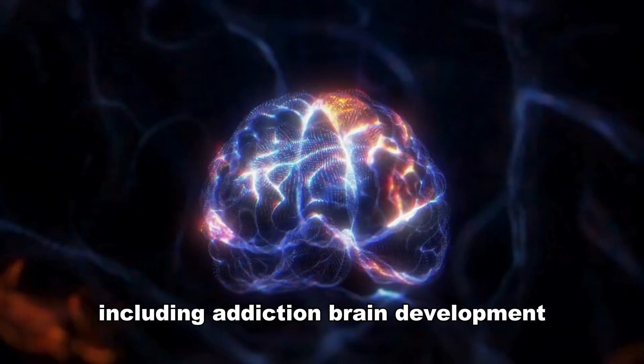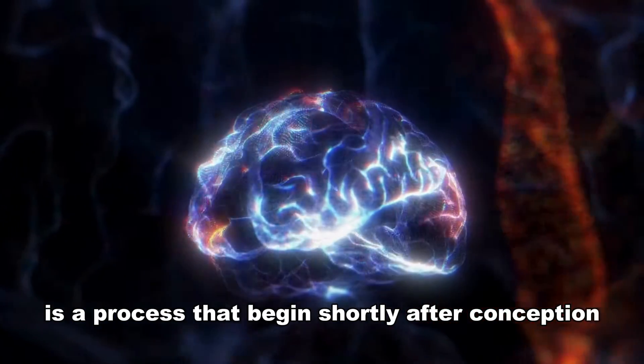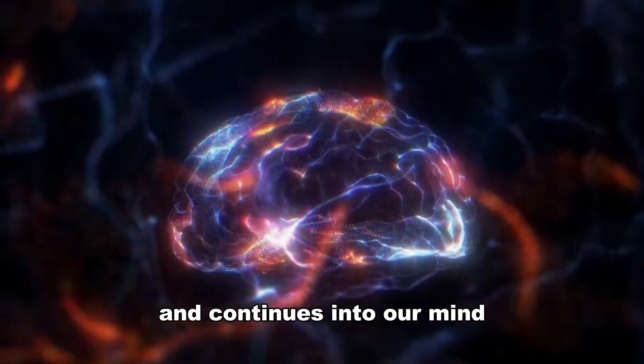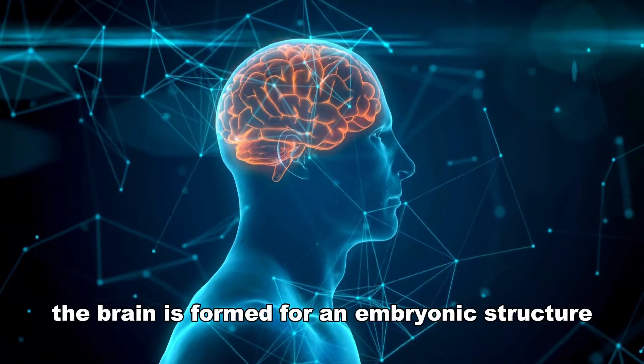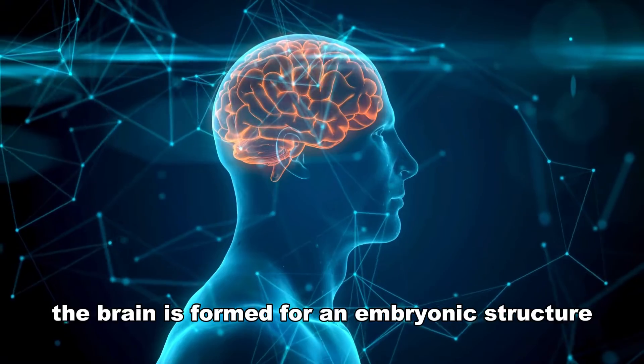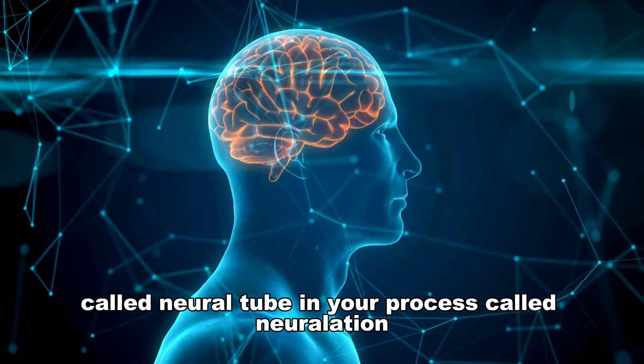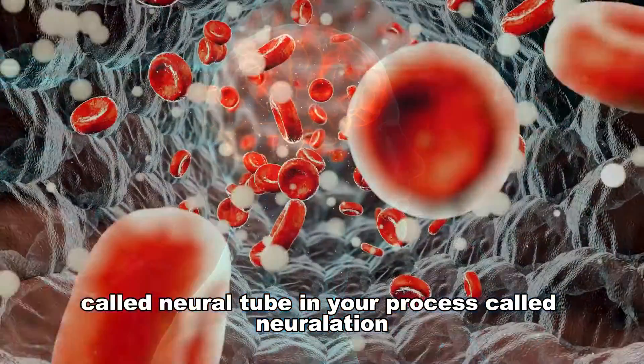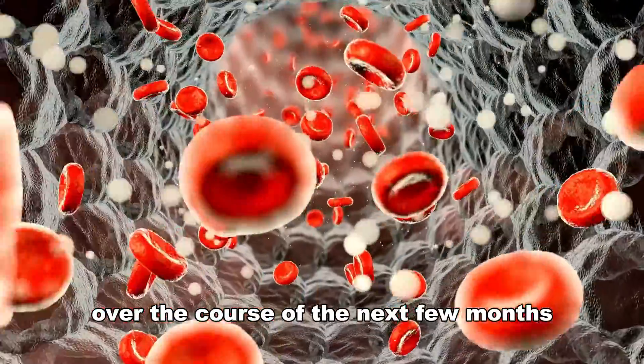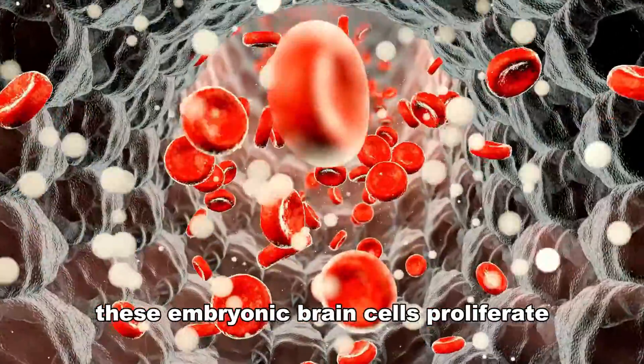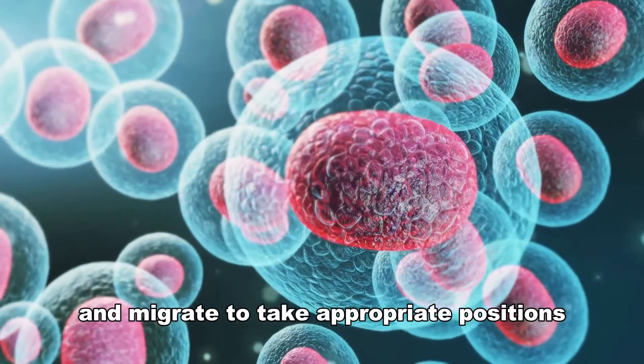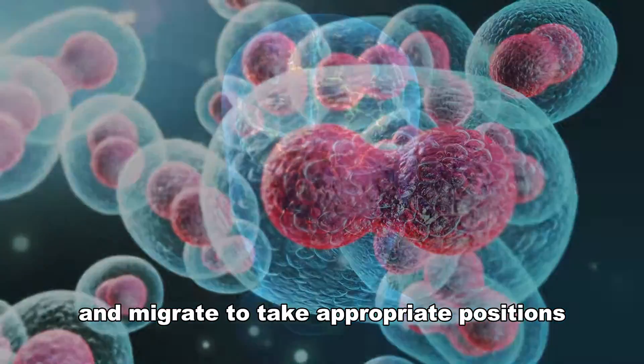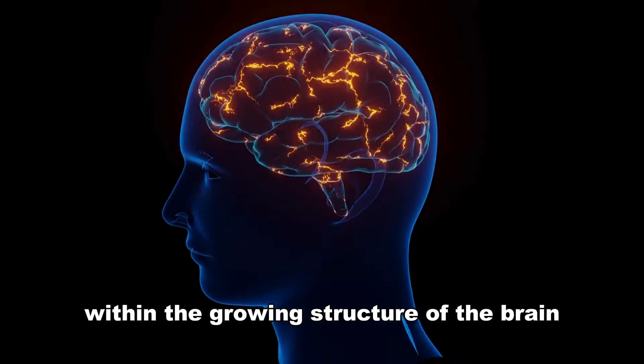Brain development is a process that begins shortly after conception and continues into our mid-20s. The brain is formed from an embryonic structure called the neural tube in a process called neurulation. Over the course of the next few months, these embryonic brain cells proliferate, differentiate into specific cell types, and migrate to take appropriate positions within the growing structure of the brain.